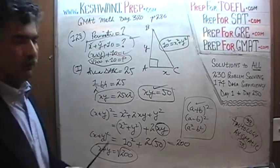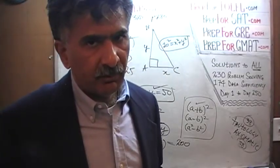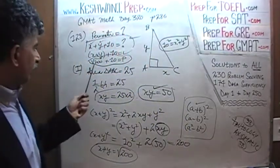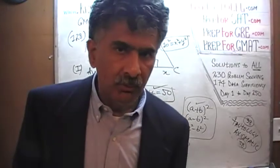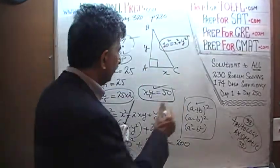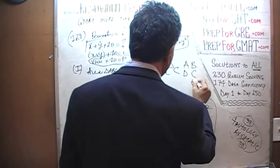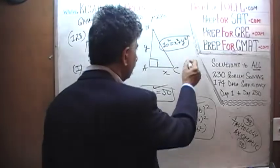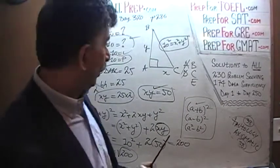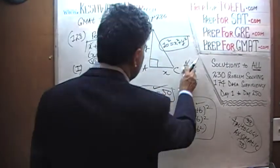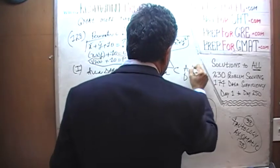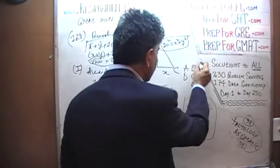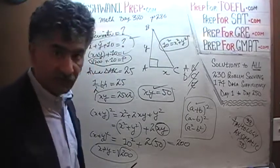We managed to find the perimeter: it's √200 + 10. The first statement is sufficient, so the answer cannot be B or E — but let's check the second statement. Now that we've established the first statement alone is enough, the answer cannot be B or E, so it will be A, D, or C. Let's look at the second statement.